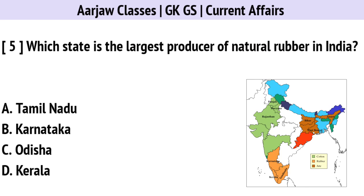Which state is the largest producer of natural rubber in India? Correct option is D — Kerala.